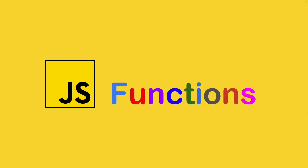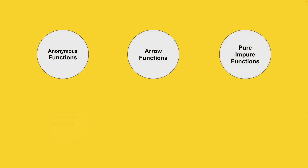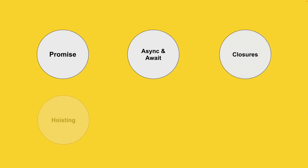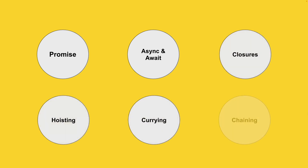Welcome to the course. In this course we will see how functions play a major role in JavaScript. We will cover from basic features of functions like anonymous and arrow functions, pure and impure, the binding, nested functions, the scopes of the function, and many more. After that we'll slowly start introducing advanced topics like promises, async and await, closures, hoisting, currying, chaining, and many more. All these topics will be covered with multiple examples to better understand each concept.